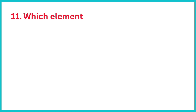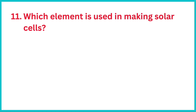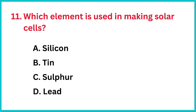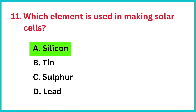Which element is used in making solar cells? The correct answer is option A: Silicon.